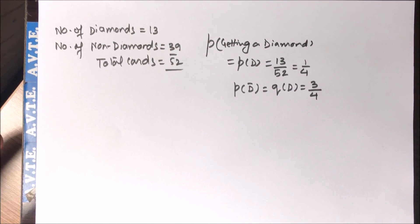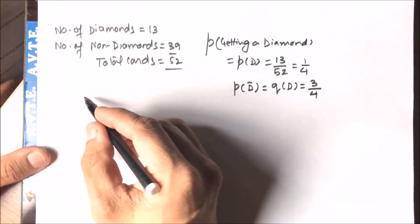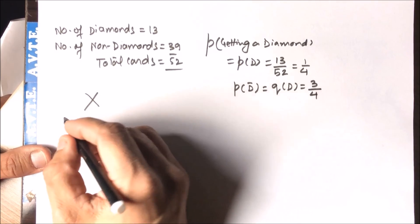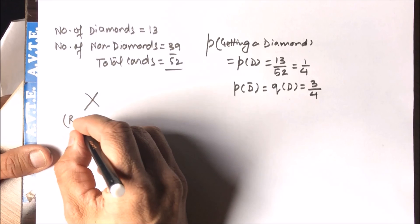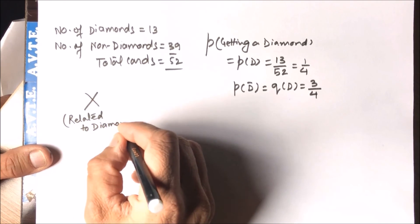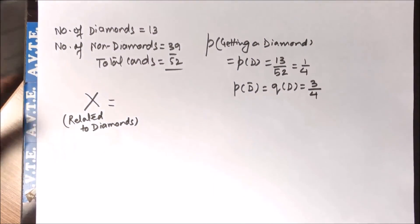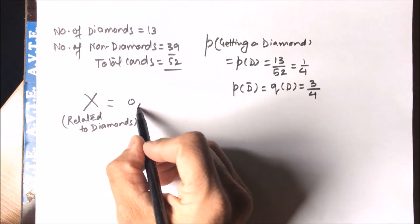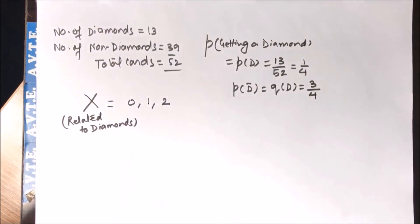Now we have to draw the probability distribution. The random variable X is connected with the success of getting diamonds. X can take values 0, 1, and 2 — either no diamonds, only one diamond, or two diamonds — since two cards are drawn.